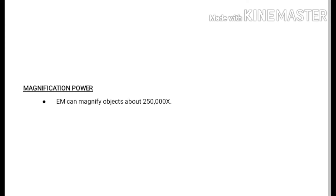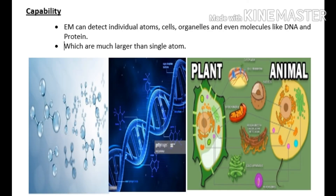Is ki capability kya hai? Electron microscope can detect individual atoms, cells, organelles, even molecules like DNA and protein. Yaani atoms, DNA aur cells — in sab ko woh hume dikha sakti hai. Agar yeh atom ko bhi dikha sakti hai toh atom se yeh saari cheezein bohat badi hoti hain, aur agar atom nazar aa sakta hai toh yeh saari cheezein hume easily nazar aa sakti hain.